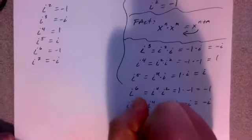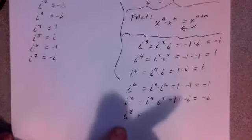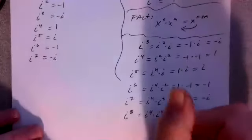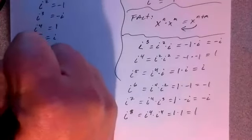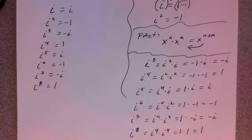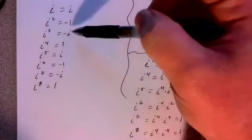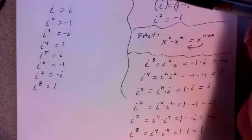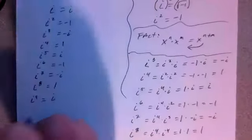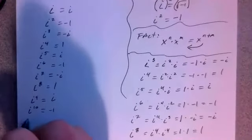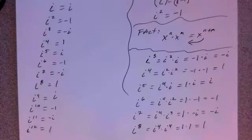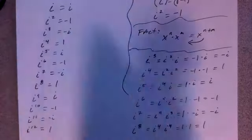What about i to the 8th? i to the 8th would be i to the 4th times i to the 4th, since 4 plus 4 is 8. And i to the 4th is 1, and 1 times 1 is 1. So i to the 8th is 1. Do you see the pattern develop? i, negative 1, negative i, 1 — and then it repeats! So i to the 9th is i, i to the 10th is negative 1, i to the 11th is negative i, and i to the 12th is just 1. This pattern just keeps going.